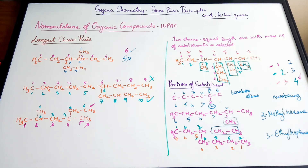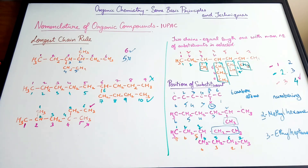So we've learned about two rules: the longest chain rule and the position of the substituent. To understand all of this in more detail, check out the video on IUPAC nomenclature basics first, and then come back here. In the next video, we will be talking about the first point of difference rule.